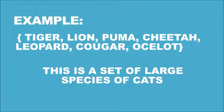Example: this is a set of large species of cats. The tiger, lion, puma, cheetah, leopard, etc. are the elements.